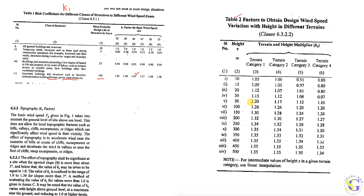Next, you should know about the topography factor, which is K3. The topography factor is calculated based on the slope value, ranging from 0 to 3 degrees up to 70 degrees, as clearly given in Annexure C. Depending on the elevation height, we calculate this value. For this current tower analysis, I am going to take the maximum value of 1.36.